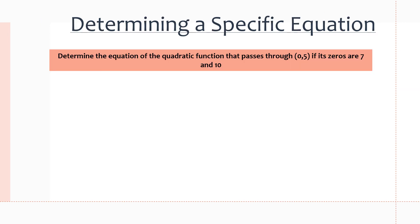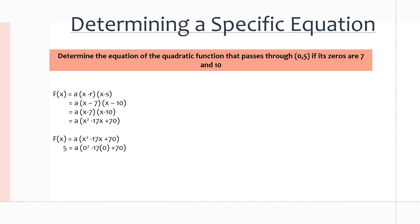In this example we need to determine a specific equation given a point that the equation passes through and two x-intercepts. We're going to use factored form and substitute in the zeros for r and s, giving us (x - 7)(x - 10). Expanding gives x² - 17x + 70. Now we find the a value using the point (0, 5), substituting x = 0 and y = 5. That gives us 0² - 17(0) + 70, which is 70, all multiplied by a, equal to 5. So a = 5/70 = 1/14.